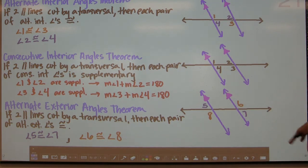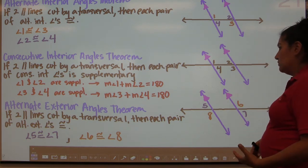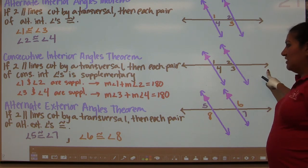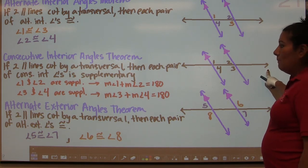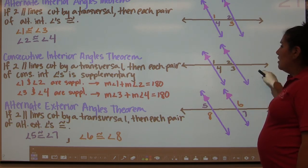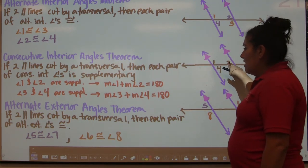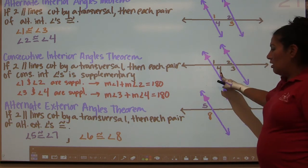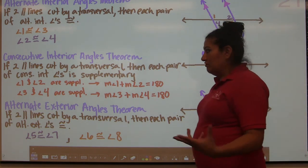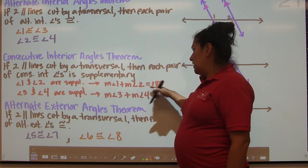We also have two other theorems. The consecutive interior angles theorem: if two parallel lines are cut by a transversal, then each pair of consecutive interior angles is not congruent but supplementary. Consecutive interior means supplementary. Angle 1 and angle 2 are consecutive interior, so they're supplementary. Angle 3 and angle 4 are also consecutive interior, so they're supplementary. That means the measurement of angle 1 plus the measurement of angle 2 equals 180.